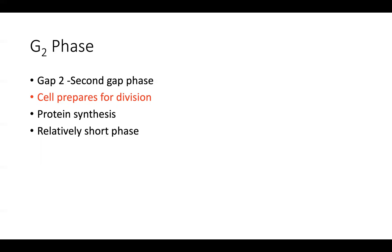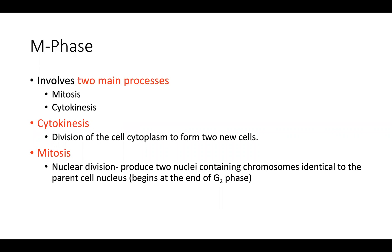Gap phase two is a relatively short phase because everything that needs to happen has now happened. The cell is preparing for division. M phase involves two main processes: mitosis and cytokinesis. Mitosis is the process where chromosomes are adjusted and distributed into opposite ends of the cell in order for cytokinesis to take place.